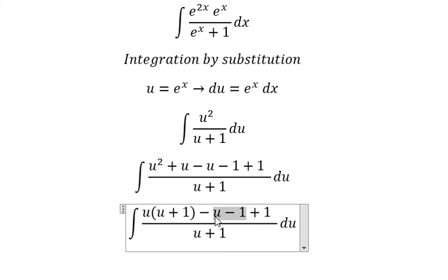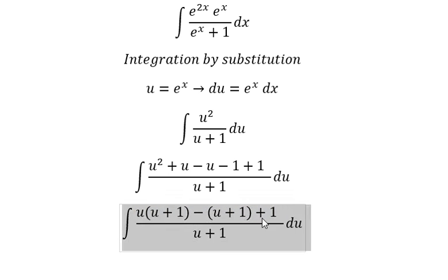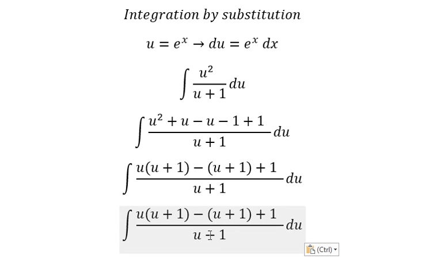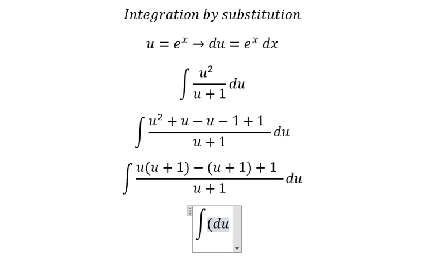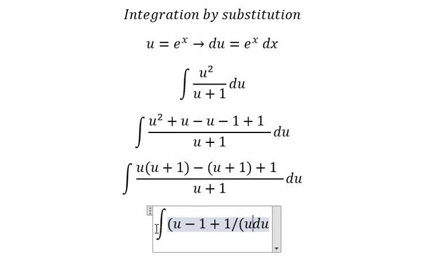So this one divided by this one and this one divided by this one, so we have u minus one plus one over u plus one.